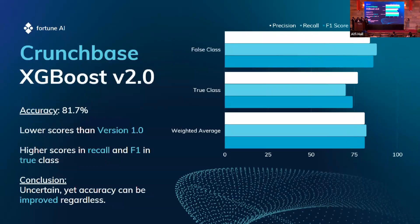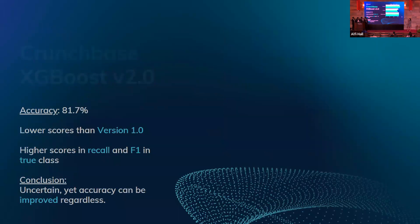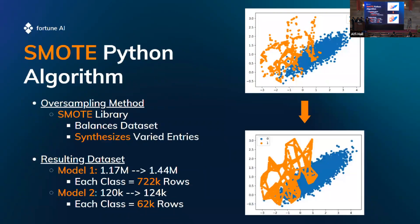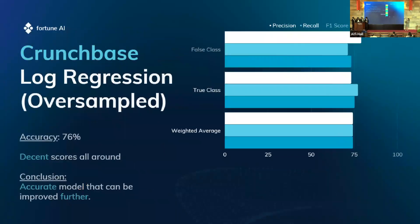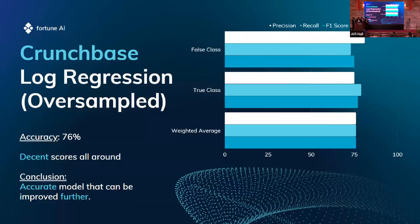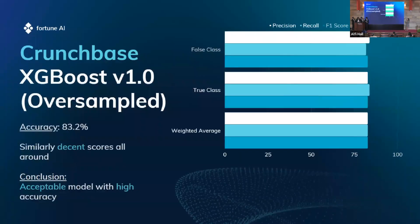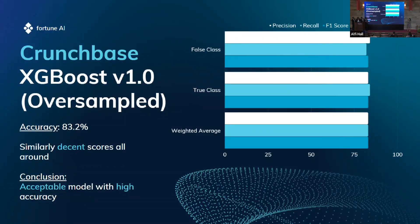Version 2 was less accurate than version 1, but had better F1 and Recall for the true class. To solve the class imbalance problem, we did oversampling with a Python algorithm called SMOTE. This synthesized varied entries, increased the dataset size, and caused each class to have about 50% representation. With oversampling, logistic regression was much less accurate overall, but scores were consistent across all classes, giving us more confidence. XGBoost version 1 oversampled gave around 83% accuracy and was consistent across all classes.